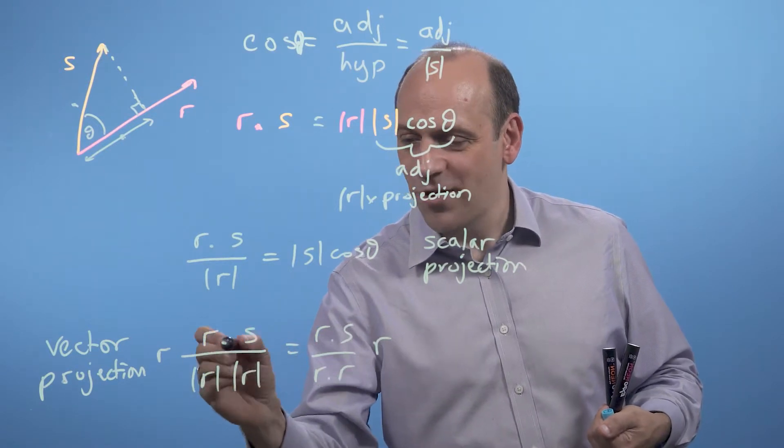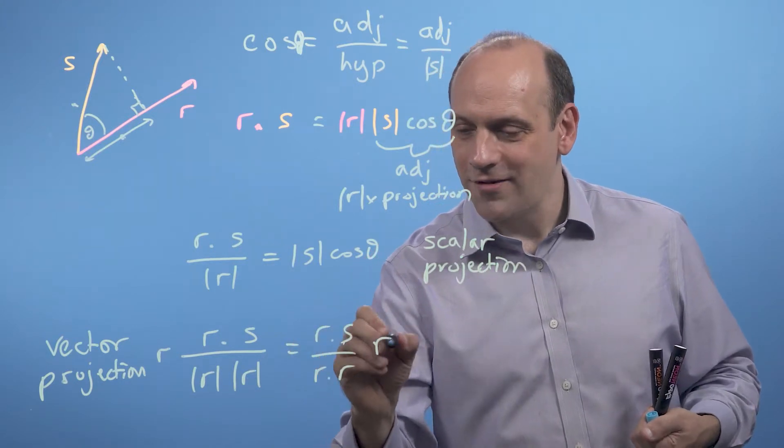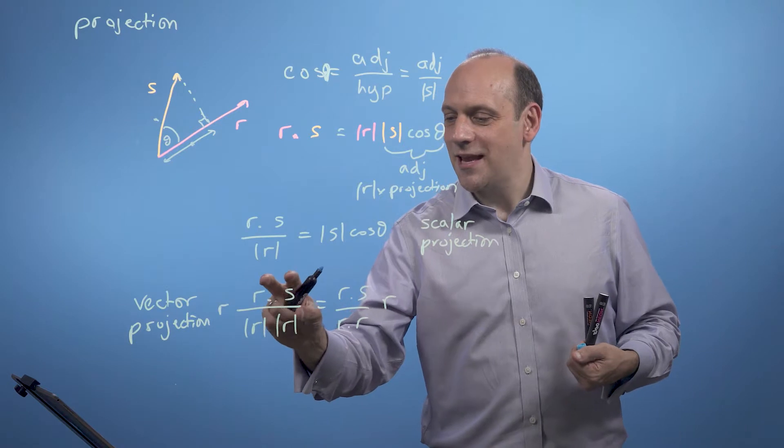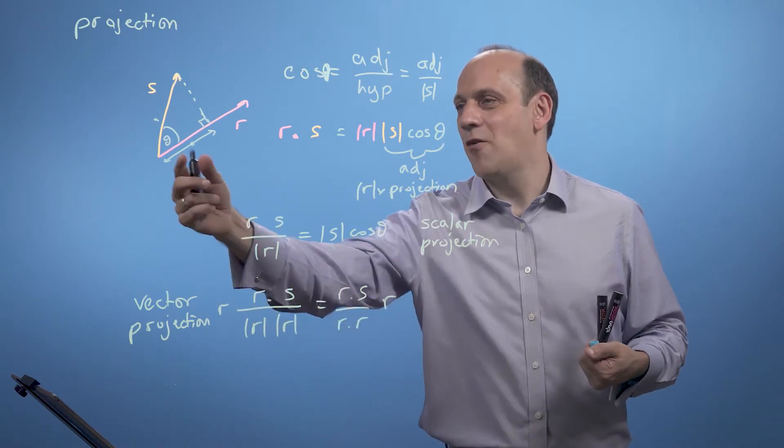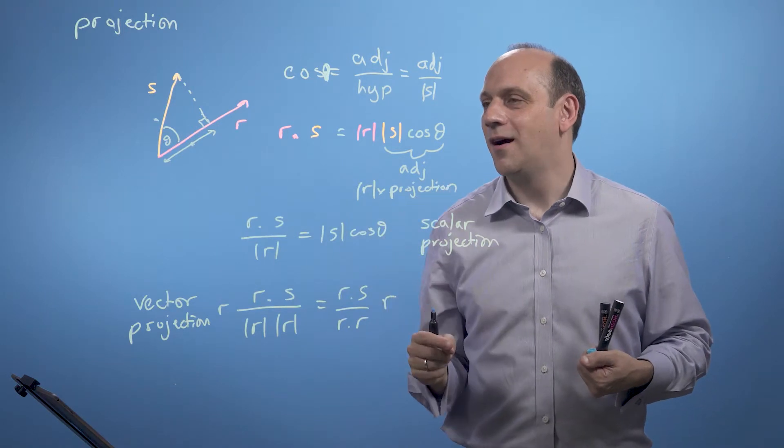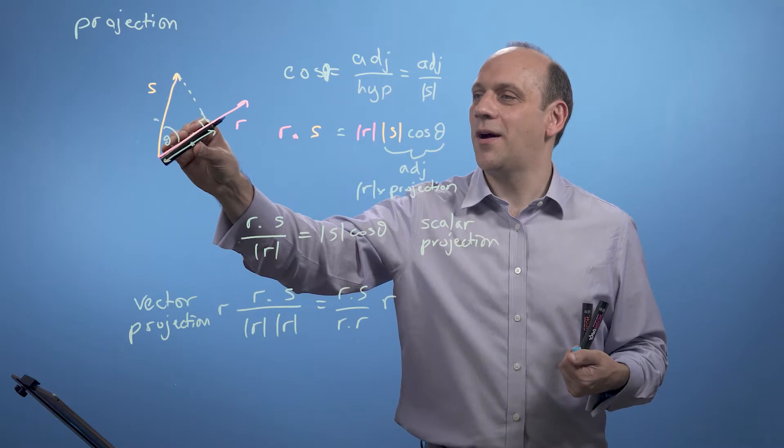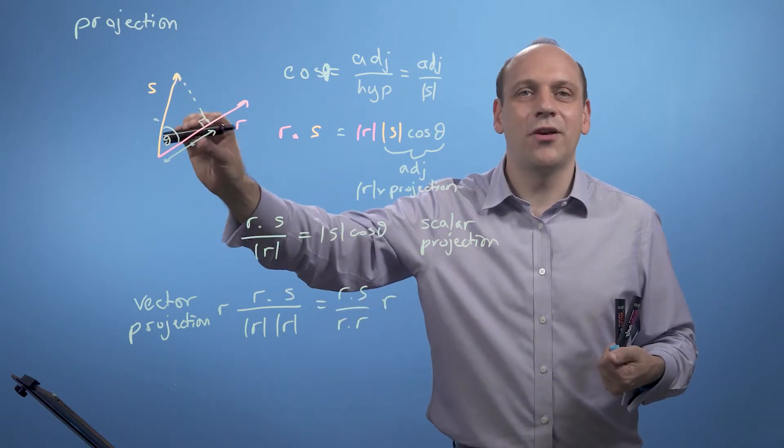So that dot product is just a number, these sizes are just a number, and r itself is a vector. So what we've done here is we've taken the scalar projection, r dot s over r, this guy, that's how much s goes along r, and we've multiplied it by r divided by its length. We've multiplied it by a vector going the direction of r, but that's been normalized to have a length 1.